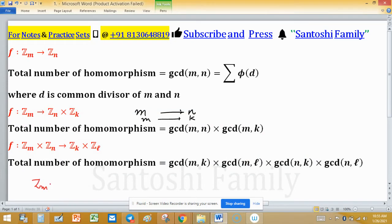Because Zm × Zn to Zk × Zl, then this is m to k and m to l, means m to k and m to l.